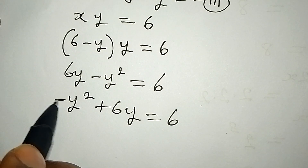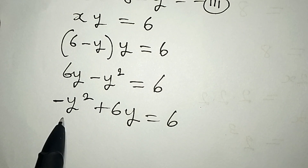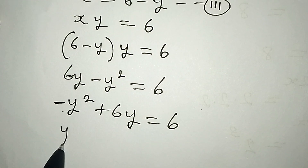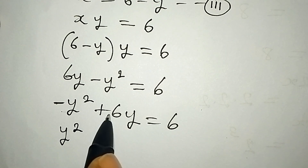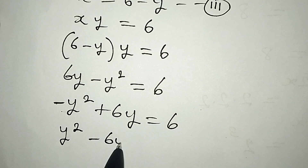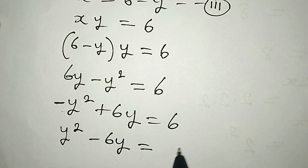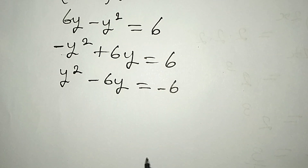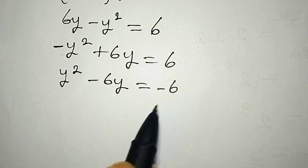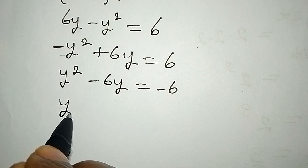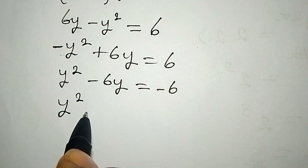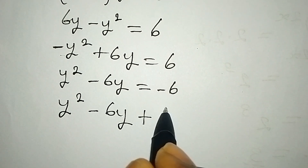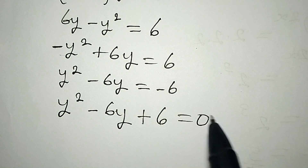This negative shouldn't be here, so we will multiply each term by negative 1 so that we have y squared. This will turn to negative 6y, and this will be equal to negative 6. This is a quadratic equation, so the constant should come to the left. We have y squared minus 6y plus 6 equals 0.